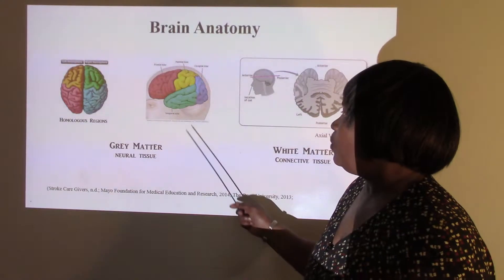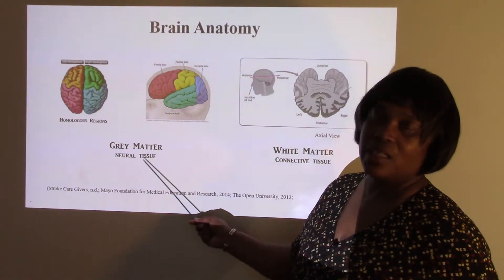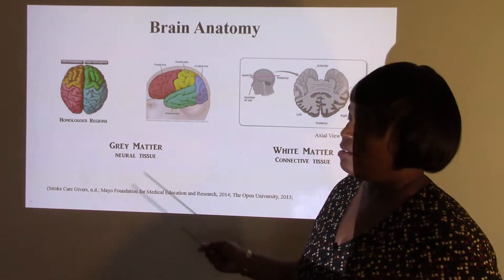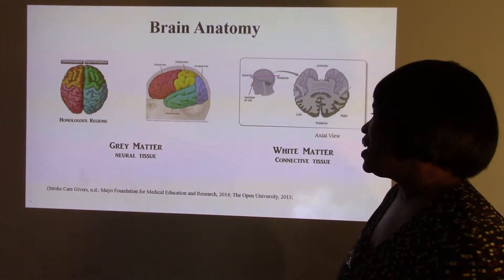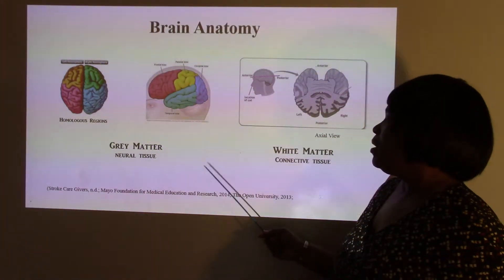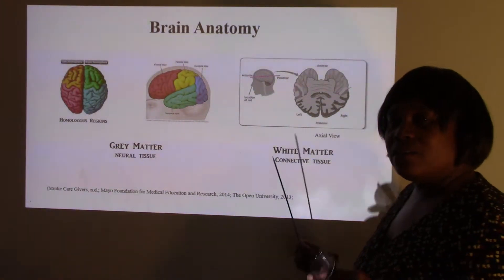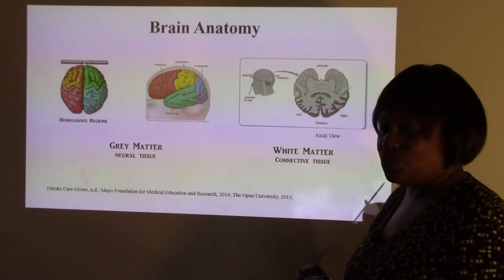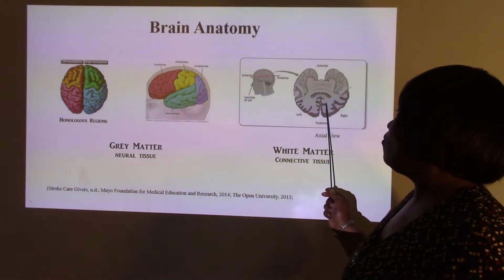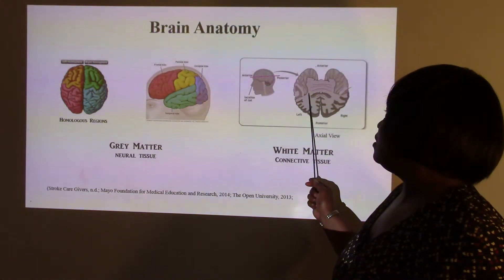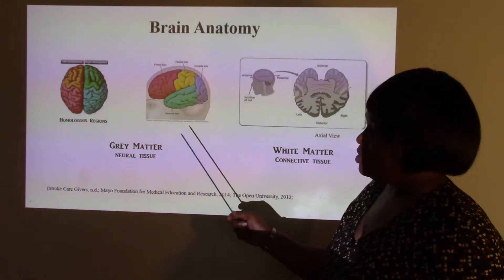Looking at the gross anatomy of the brain, we can see the gray matter, which is the neural tissue. There is also a material called white matter, which consists of connective tissues. Here on this slide we have one of the large connective tissues that connects the left and right hemispheres.